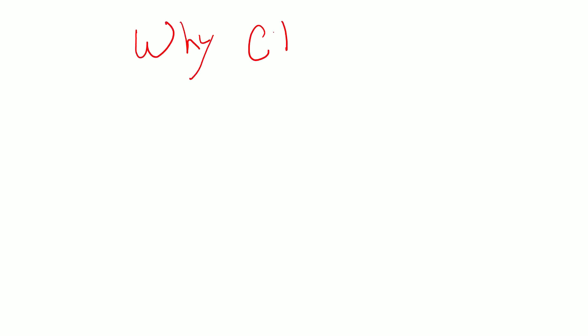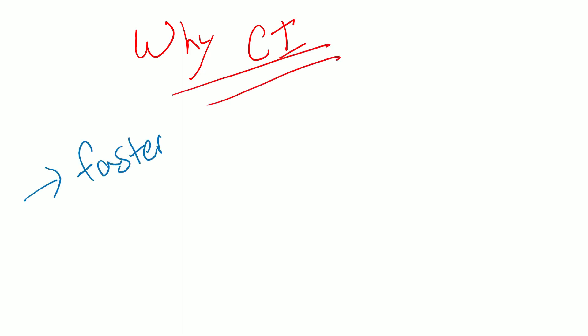So why is CI so important? There are some key advantages to highlight. CI is absolutely necessary for faster feedback. By automatically building and testing code changes, teams can get feedback on their work faster, which can help them to identify and fix issues more quickly.